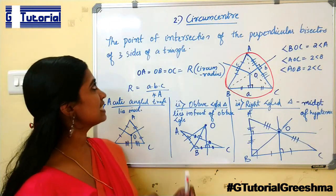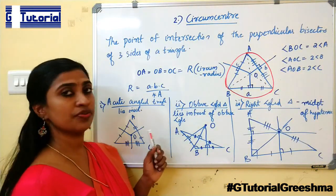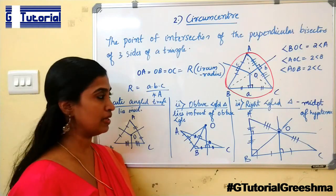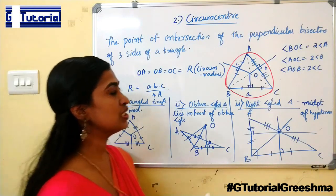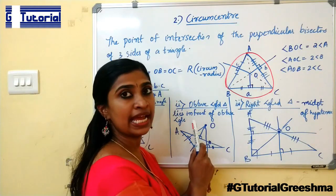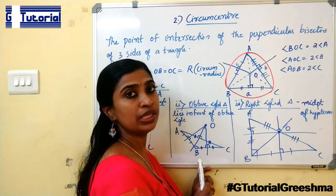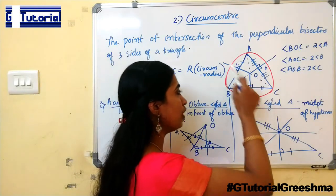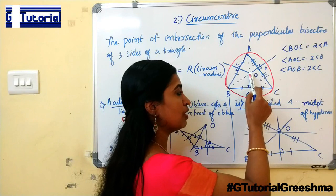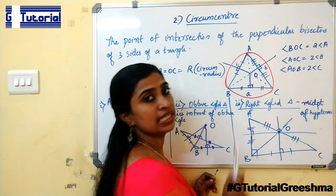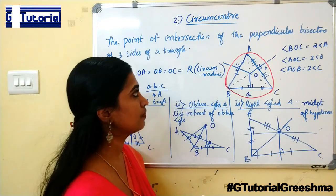Circumcenter is the point of intersection of the perpendicular bisectors of the three sides of the triangle. A perpendicular bisector is the line which is perpendicular to the side and divides it into two equal halves. The point of intersection of these three perpendicular bisectors is called the circumcenter. O is the circumcenter.